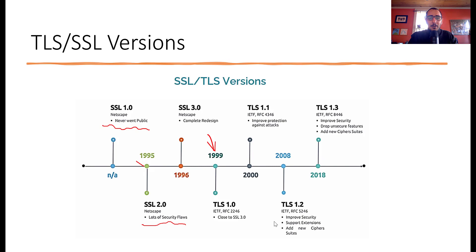Then the rebranding happened in 1999 to TLS 1.0, which was similar to SSL 3.0. TLS 1.1 came after but also had vulnerabilities. The two most commonly used TLS versions today are TLS 1.2 and TLS 1.3. TLS 1.1 is no longer recommended. TLS 1.3 added more cipher suites, improved proven security, and dropped insecure features. There will be a comparison graph at the end of the slides.